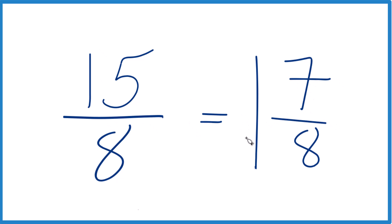So 15/8 as a mixed number is 1 and 7/8. You can check that because 1 times 8 is 8, 8 plus 7 is 15, and we just keep the 8 the same here.